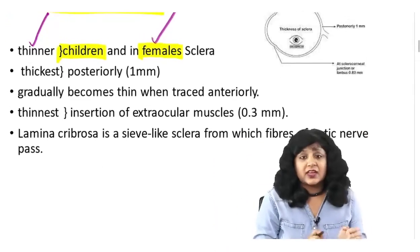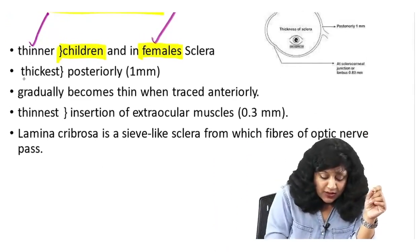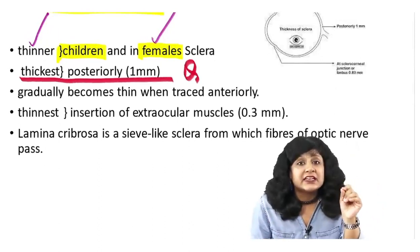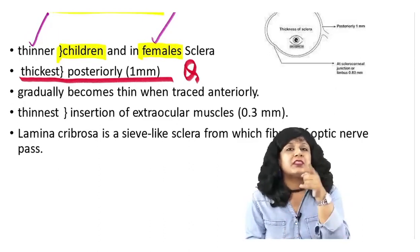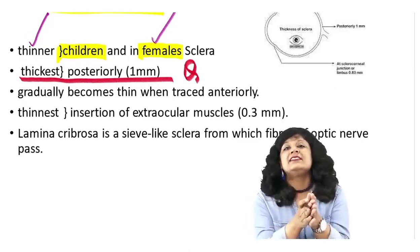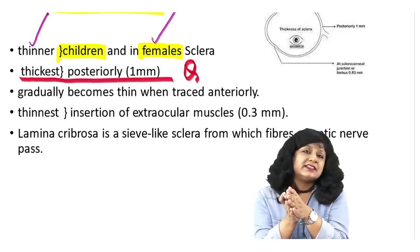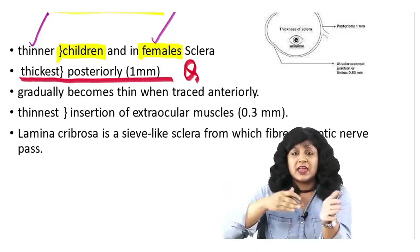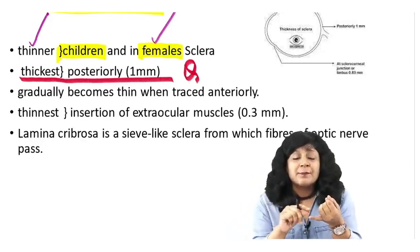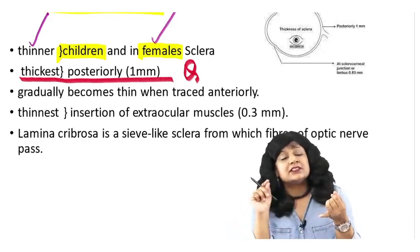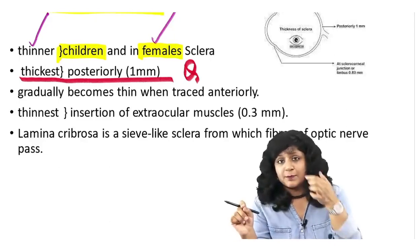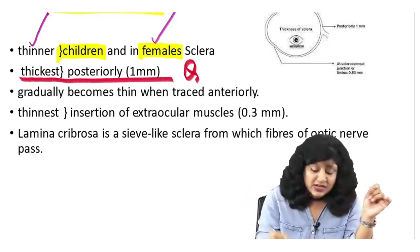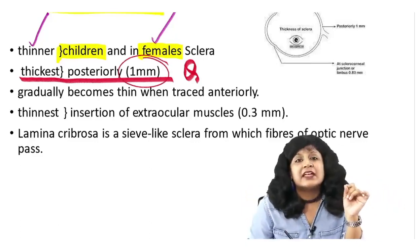A very commonly asked question is: where is the sclera thickest? It is thickest posteriorly. Do not confuse this with the thickness of the lens capsule — the thickness of the lens capsule is thinnest at the posterior pole, so they go poles apart. The thickness of the sclera is thickest posteriorly and it is 1 mm.